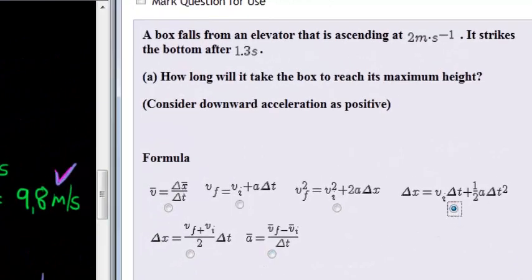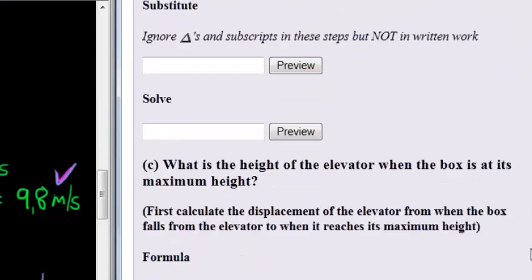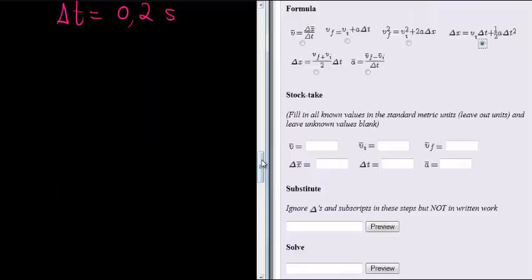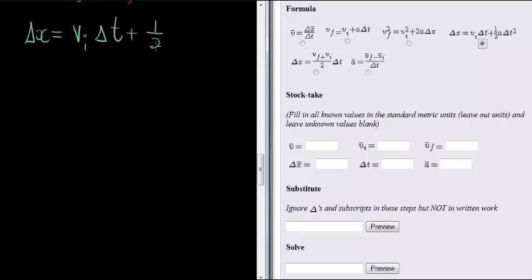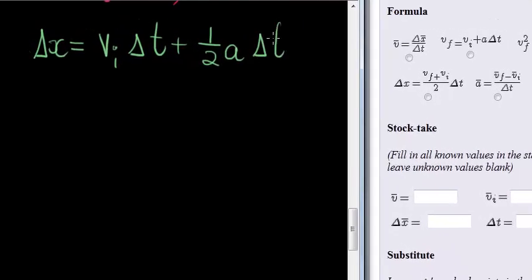And that would be this formula. Wrong question. That would be, so let's write down our formula. Δx is equal to initial velocity times time plus a half acceleration times Δt squared.